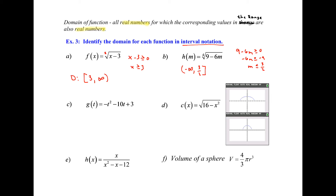Part c: g of t equals negative t squared minus 10t plus 3. This is a quadratic. Starting with all real numbers, are there any restrictions? No — you can square any number you want. So the domain for this quadratic, as with all quadratics, is negative infinity to infinity, meaning all real numbers.